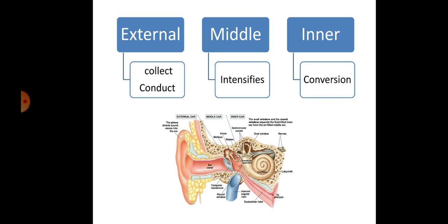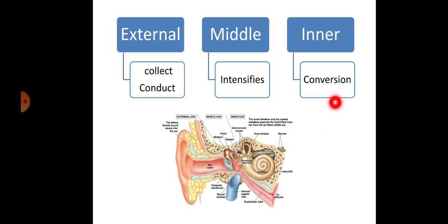The ear is divided into three parts: external ear, middle ear, and internal ear. The external ear is designed mainly for the collection and conduction of sound waves. The middle ear intensifies or strengthens the sound waves — that is called intensification. The internal ear is involved in the conversion process, where sound wave energy is converted into nerve energy or action potential.